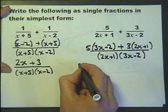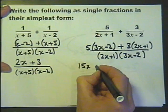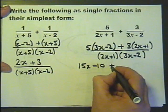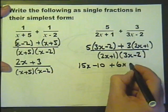Removing the brackets, 5 times 3x, 5 times minus 2, plus 3 times 2x, plus 3 times 1.